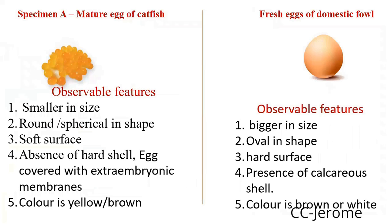For example, specimen A, mature egg of a catfish. Observable features simply means when you look at the specimen, what do you see? What can you observe physically? Small in size, round or spherical in shape, soft surface, absence of hard shell, the egg is covered with embryonic membrane, the color is yellow or brown. For egg of domestic fowl, it's bigger in size, oval in shape, hard surface, presence of calcareous shell, which means it's made up of calcium carbonate. The egg could be brown or white in domestic fowl.